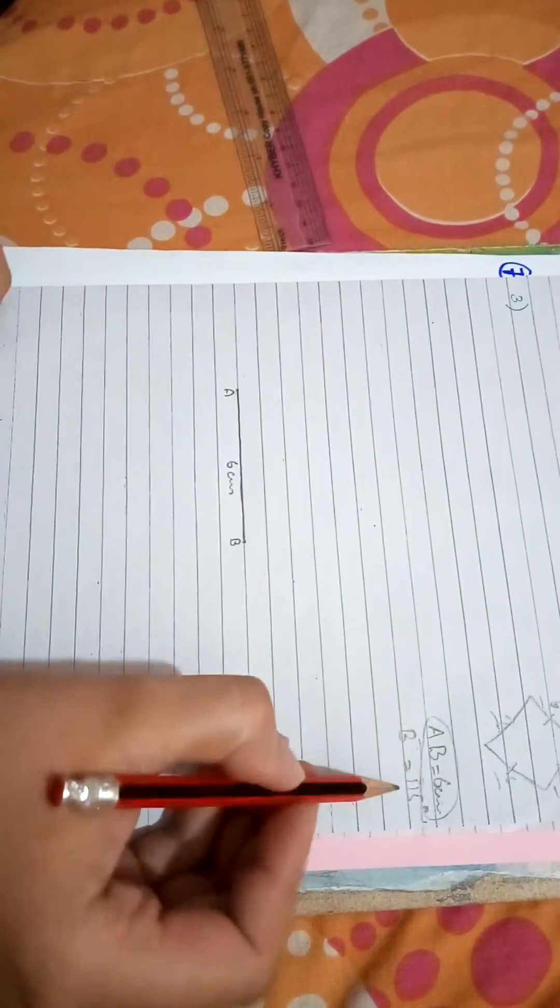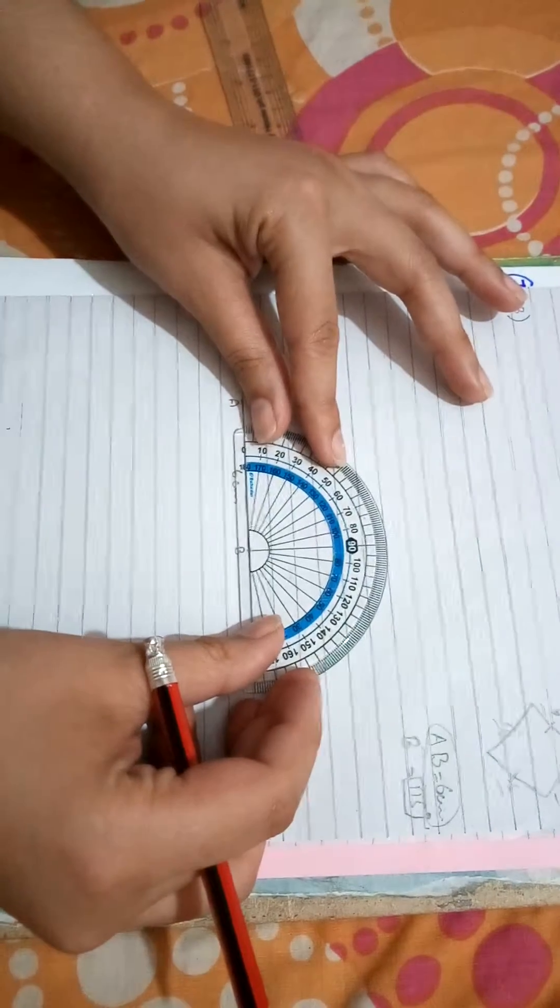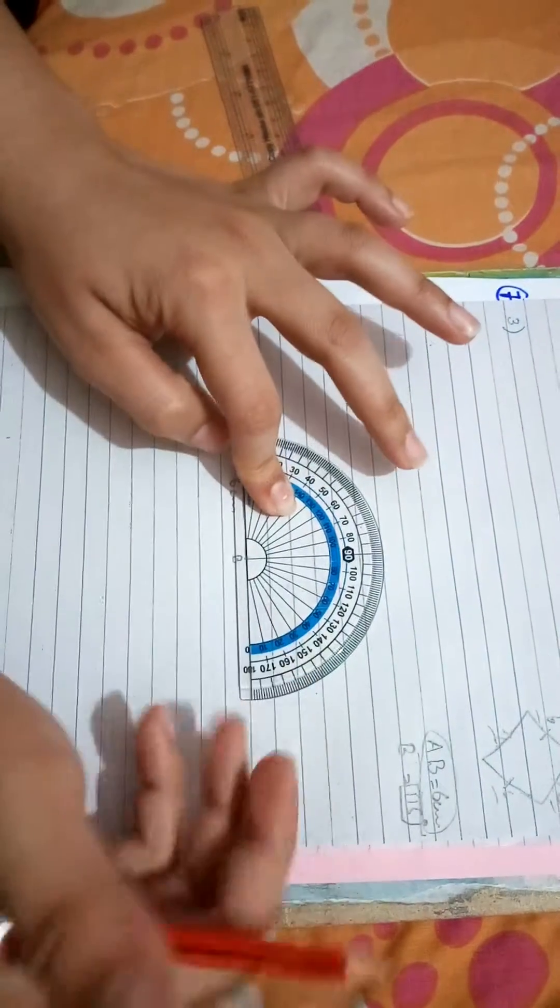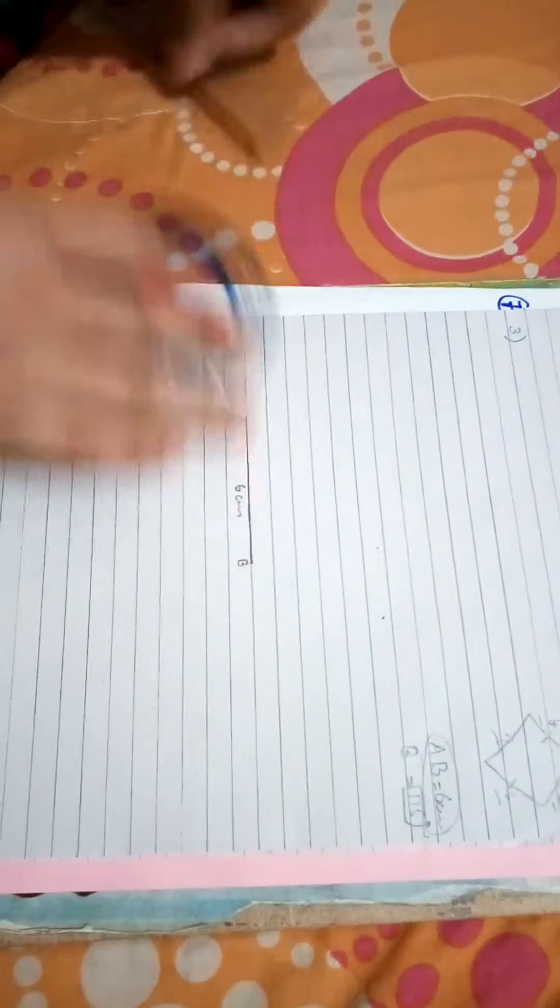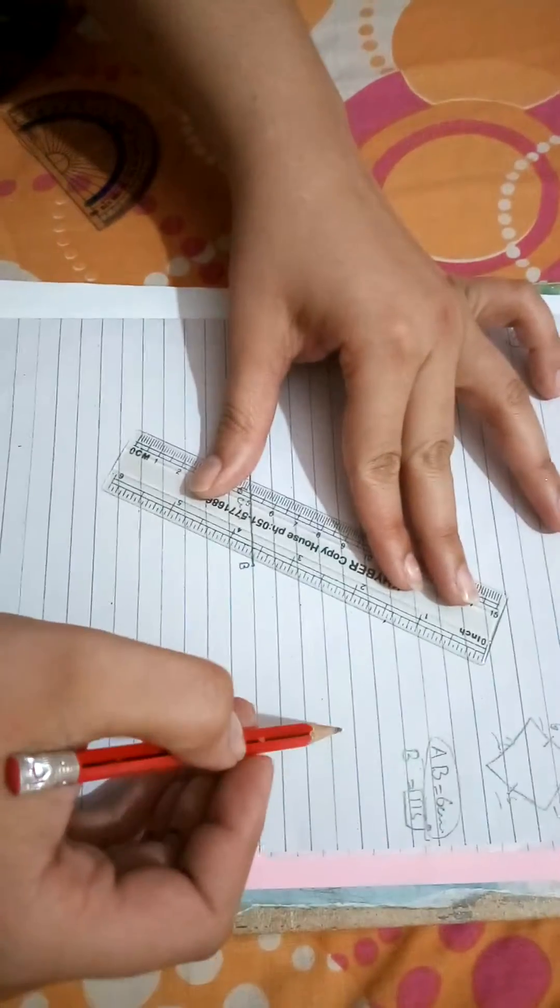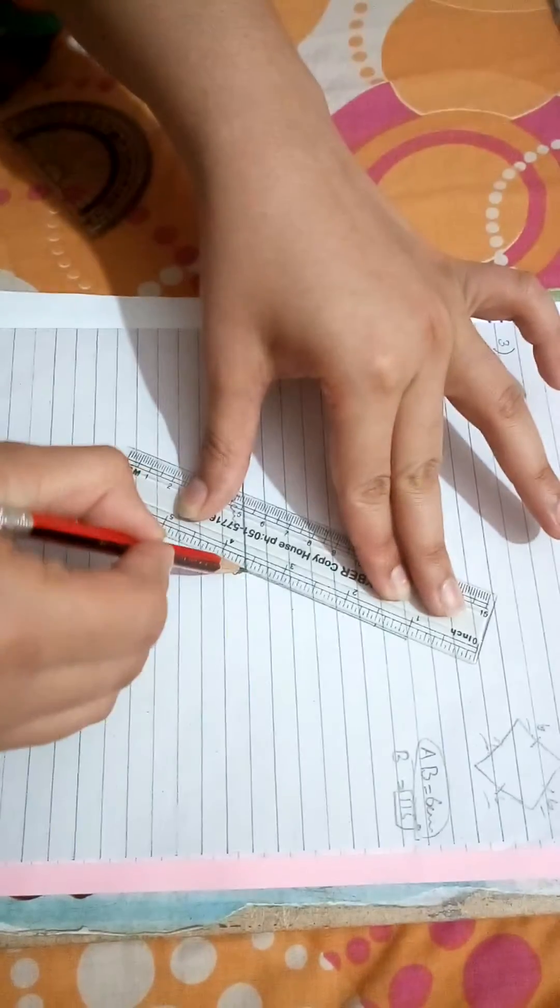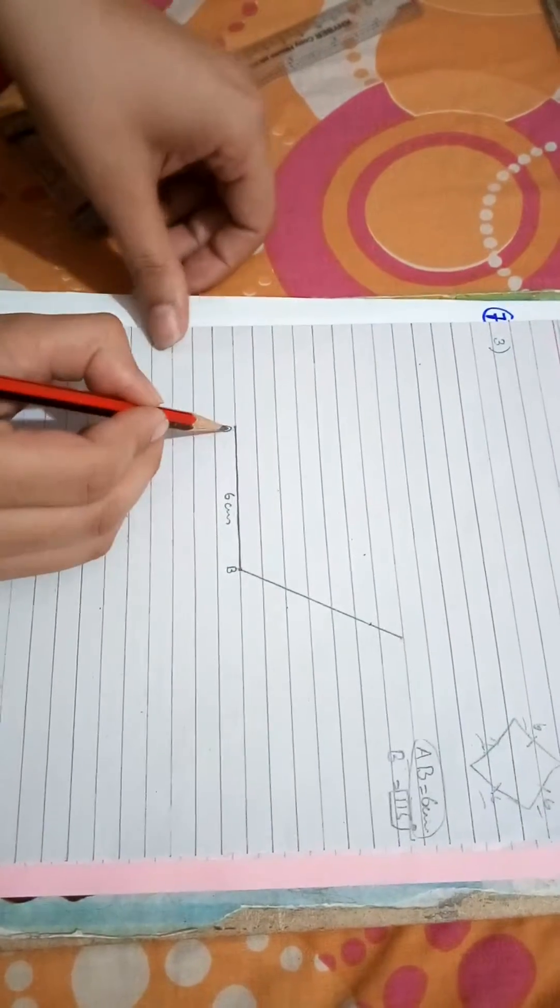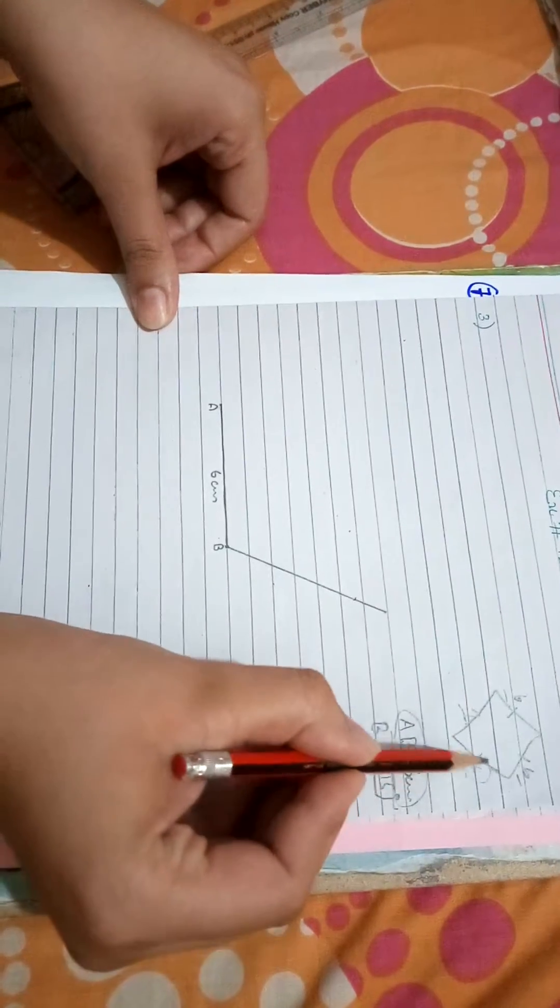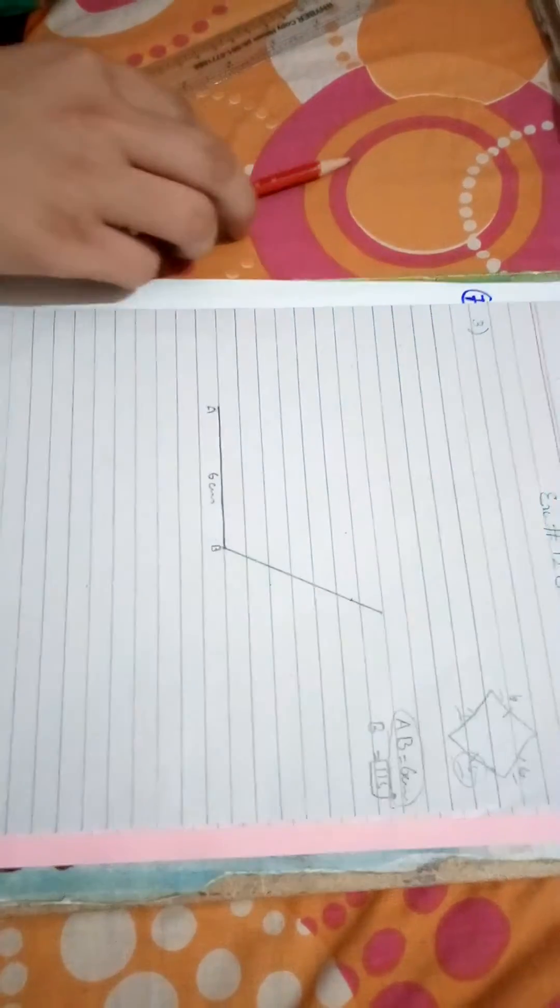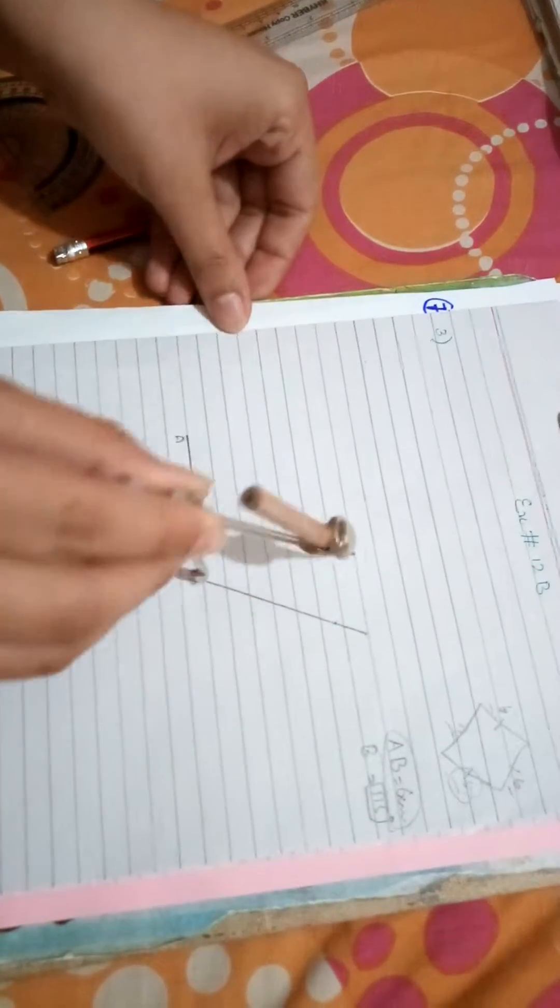Then after that, take B as the center and mark angle 115 degrees. As this side is 6 centimeters, and by the property of rhombus all four sides will be 6 centimeters, so open your compass to the reading 6 centimeters, taking B as center and mark an arc.